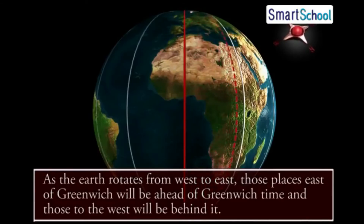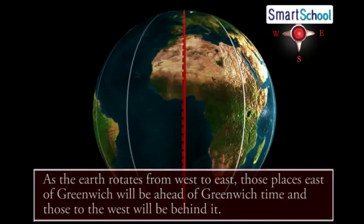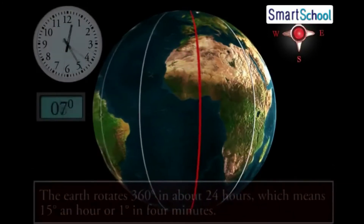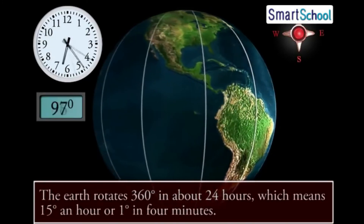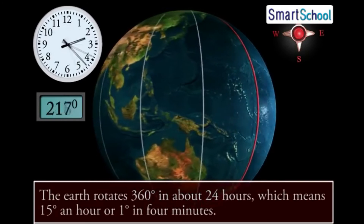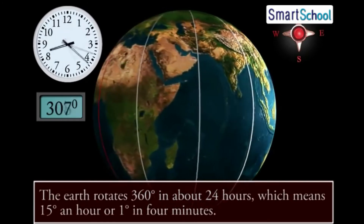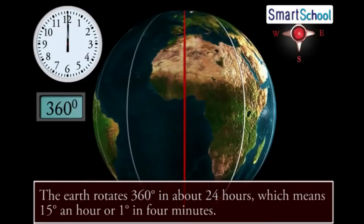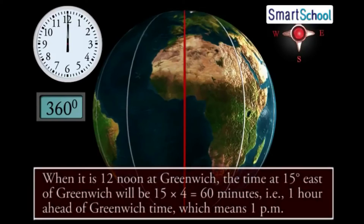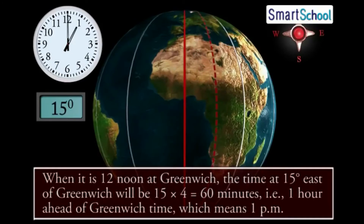Those places east of Greenwich will be ahead of Greenwich time, and those to the west will be behind it. The rate of difference can be calculated as follows: the earth rotates 360 degrees in about 24 hours, which means 15 degrees an hour, or 1 degree in 4 minutes. Thus, when it is 12 noon at Greenwich, the time at 15 degrees east of Greenwich will be 15 × 4 = 60 minutes, i.e. 1 hour ahead of Greenwich time, which means 1 pm.